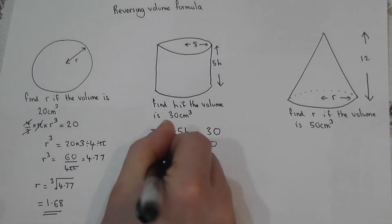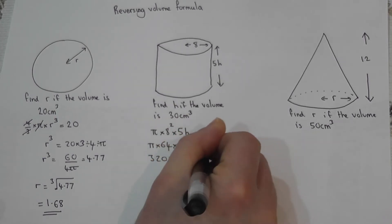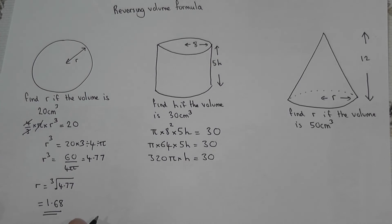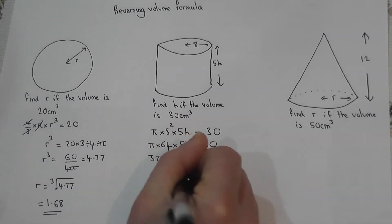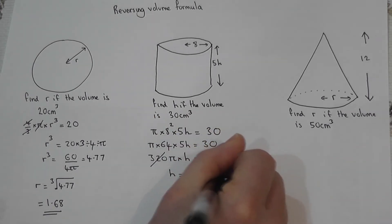So this becomes 320 pi h, and this equals 30. Now, like in the first example, I want to unravel this to find h. So I'm going to basically do the opposites. To find out h, I will do 30 and I will divide by 320 and I will divide by pi.